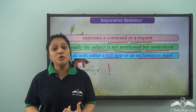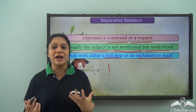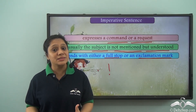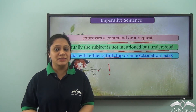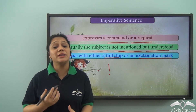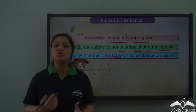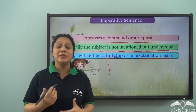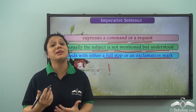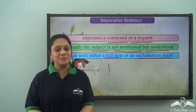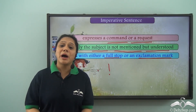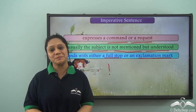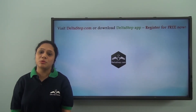So now you know about two different kinds of sentences: the declarative sentence and the imperative sentence. I hope you can distinguish between them. You need to do a lot of exercises with these sentences so that you can identify them easily. We shall soon learn about the other kinds of sentences in detail. Don't forget to subscribe to our channel.